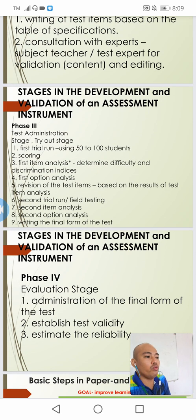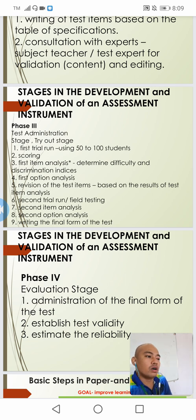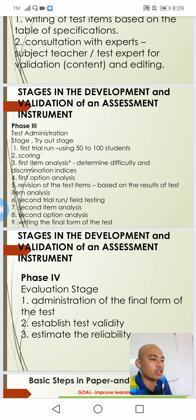For the third phase, we do test administration, which is actually the try-out stage. We first conduct a trial run using 50 to 100 students. After the trial, we score the test, and this score becomes our basis to conduct item analysis. We determine the difficulty and discrimination indices of all the items we have constructed.